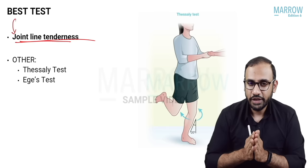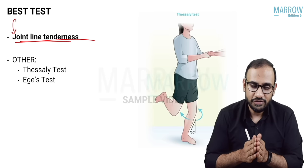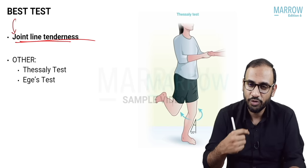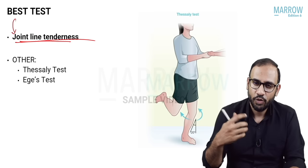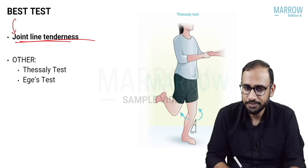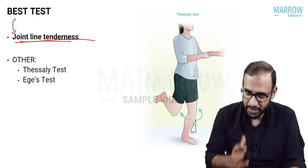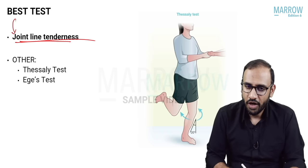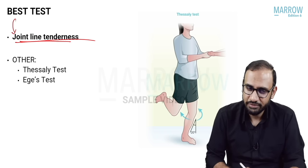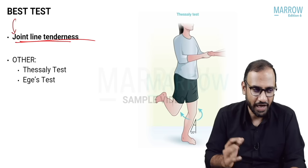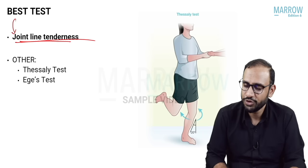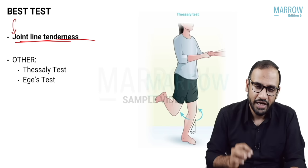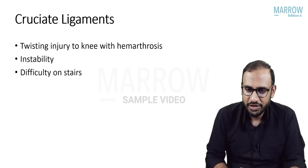We've discussed clinical tests for collaterals and meniscus. What about the cruciate ligaments? The cruciates provide sagittal plane stability, so you provoke symptoms in the sagittal plane. They get injured via twisting, hyperextension, anterior translation, hyperflexion, and posterior translation. Immediate swelling and instability follow, with difficulty walking up or down stairs. For the ACL, translate the tibia anteriorly: flex the hip to 45 degrees and knee to 90 degrees, stabilize the foot, and translate the tibia anteriorly — this is the anterior drawer test.